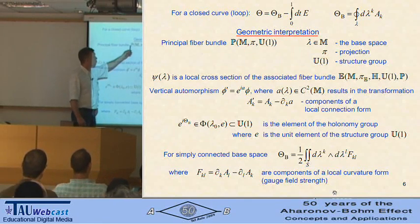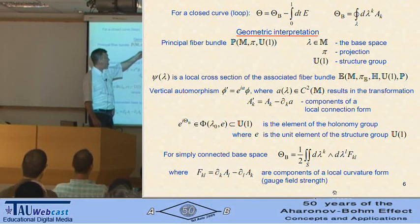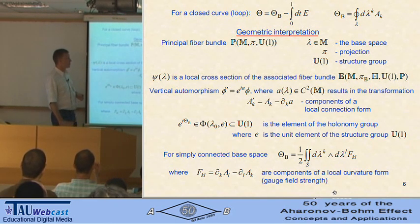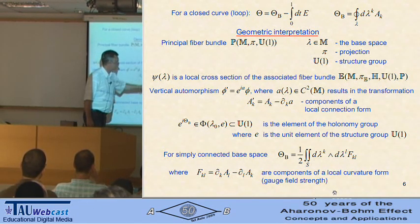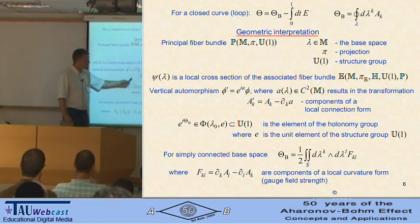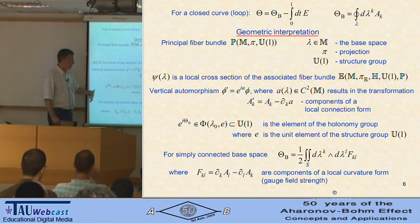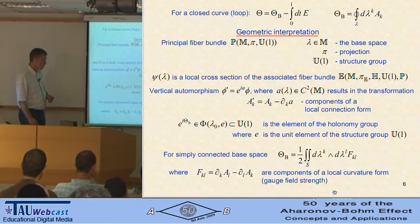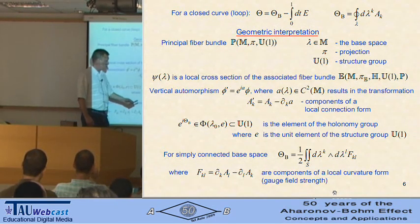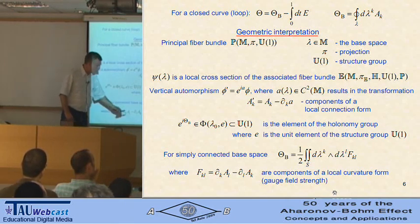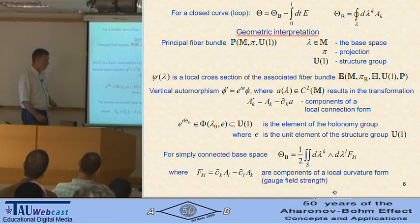We consider a closed curve on manifold M. Then the Berry phase is given by a contour integral of a_k, and it has a very simple geometric interpretation. We have a principal fiber bundle where M is the base manifold with some projection, and U(1) is the structure group. A vector of the Hilbert space is a local cross-section of the associated fiber bundle. Under vertical automorphisms, where alpha is some differentiable function, we have the usual transformation for the components of the local connection form. The exponent of the Berry phase is an element of the holonomy group. If the manifold is simply connected, then using Stokes' theorem we can express it through a surface integral, where S is some smooth surface having lambda as its boundary, and f_{kl} are components of the curvature two-form, or gauge field strength.